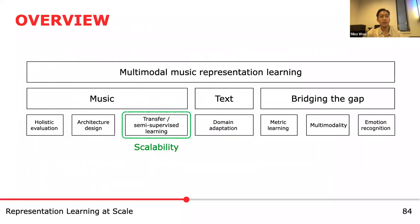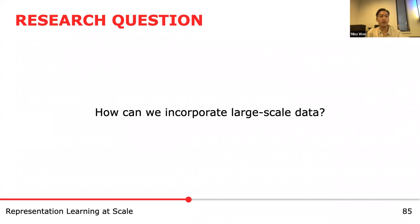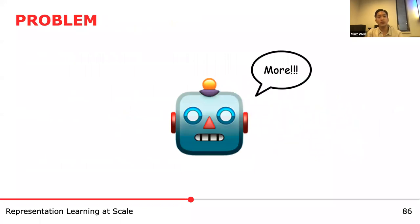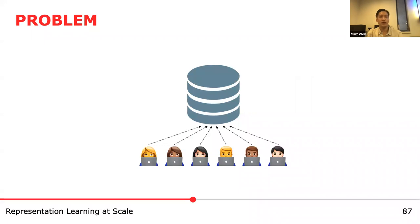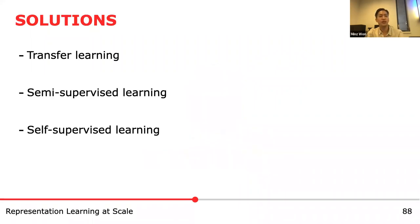The next chapter is about representation learning at scale. The research question is: how can we incorporate large-scale data for music representation learning? Deep learning models are data-hungry — with more data, performance improves. This creates an irony: we started music classification research to save human labeling efforts, but now we need to label more data to facilitate automatic music classification. Solutions include transfer learning, semi-supervised learning, and self-supervised learning. In this presentation, I will mainly highlight our contributions using these approaches.